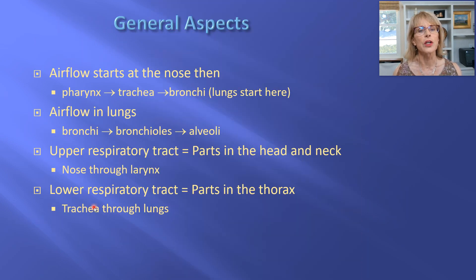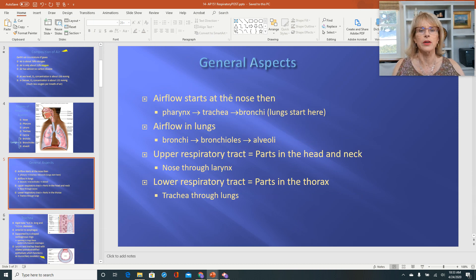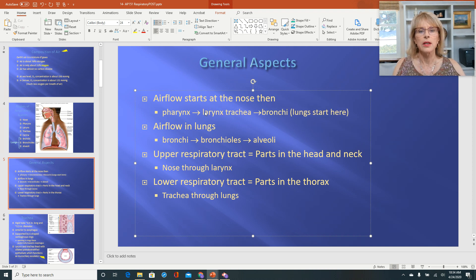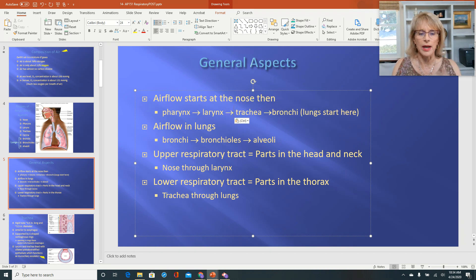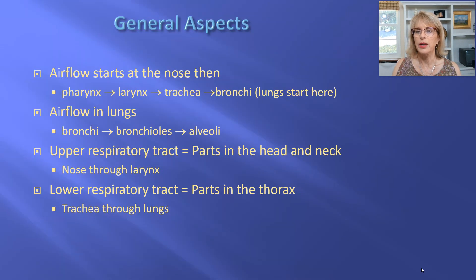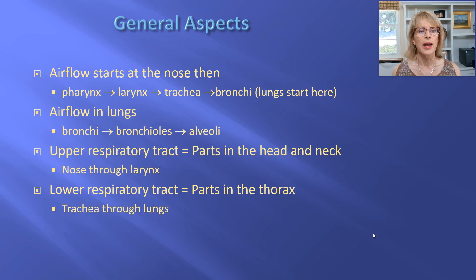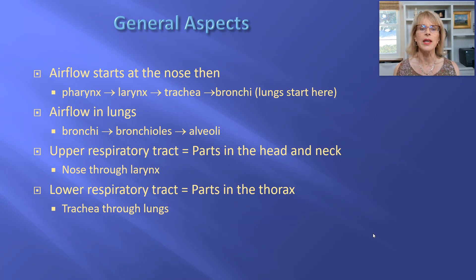So airflow starts at the nose, then the pharynx, then the larynx, then the trachea, then the bronchi. The lungs start at the primary bronchi — the primary bronchi are in the mediastinum and go into the lungs. Within the lungs, the path goes: primary bronchi, secondary bronchi, tertiary bronchi, then the bronchioles, then the alveoli.